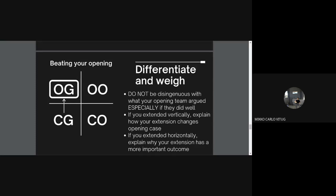Your differentiation and weighing will depend on the kind of extension you decided to roll with. If you're extending vertically, you'll have to say you're arguing a similar conclusion — but it's a matter of either explaining that your opening does not get that conclusion, or proving why the conclusion is even better given your new mechanism, new characterization, et cetera. If you're extending horizontally, you have to explain why your extension has a more important outcome — they argued A, we argue B, B is better than A. Very straightforward. Whenever you have a horizontal extension, it's really just a matter of being able to weigh it out.